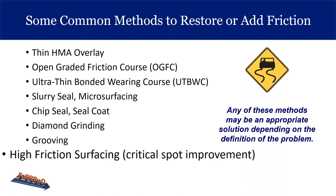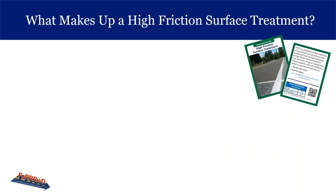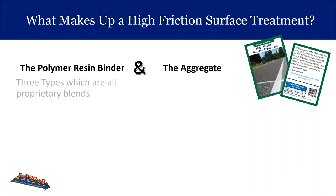The high friction surface treatment has the very best results, especially on our two-lane rural roads in curves and also at intersections to help with deceleration. It uses a polymer resin binder and a special type of aggregate — calcine bauxite.